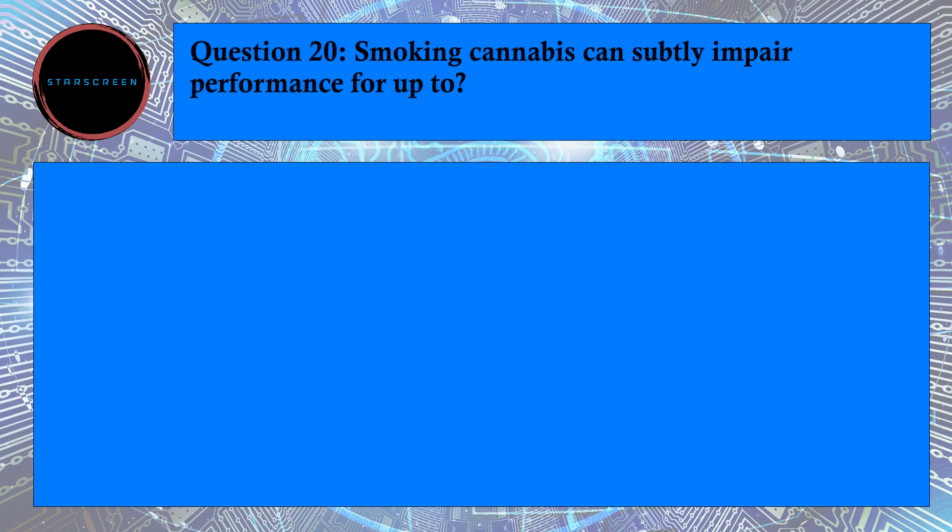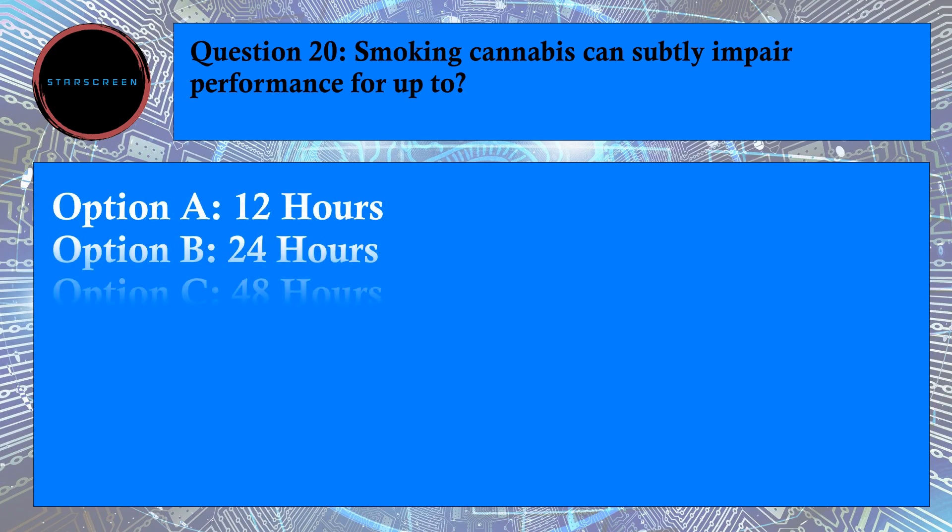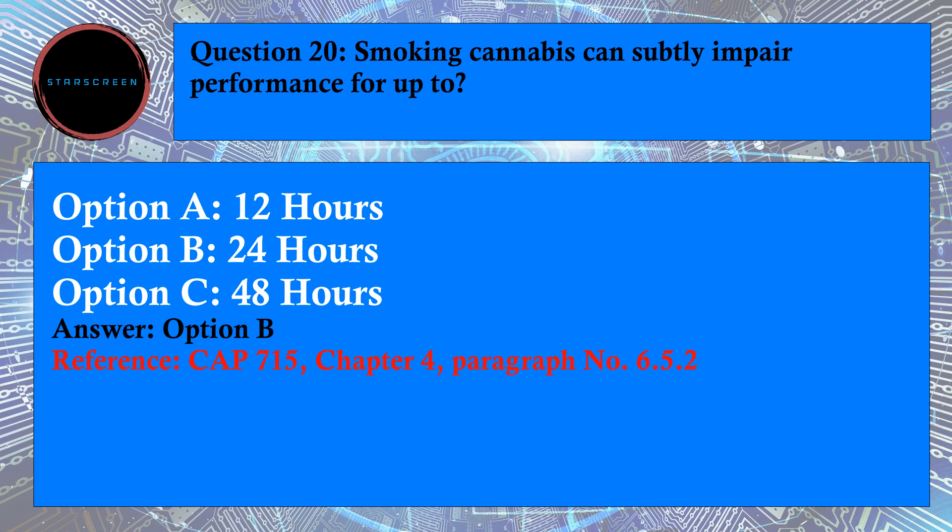Question number 20: Smoking cannabis can subtly impair performance for up to? Option A, 12 hours, Option B, 24 hours, and Option C, 48 hours. Correct answer is B, 24 hours. For answer, refer to CAP715, Chapter 4, Paragraph number 6.5.2.